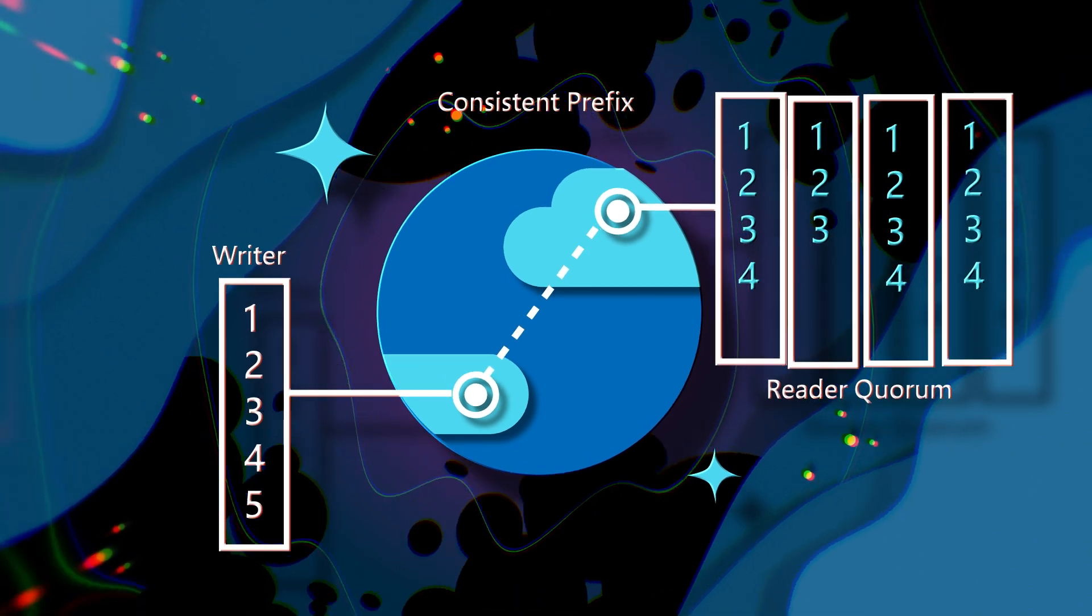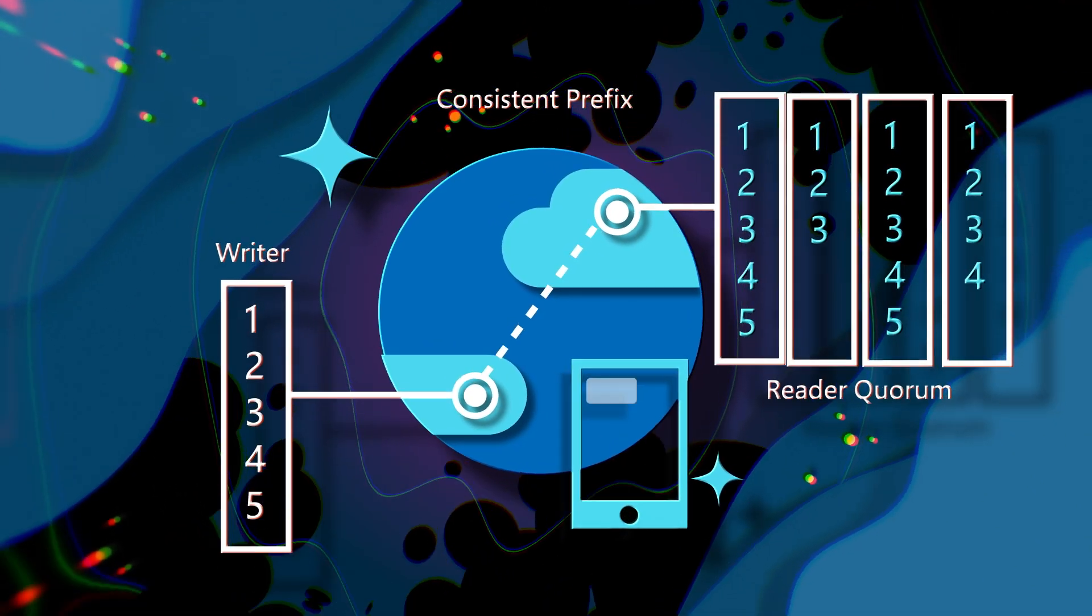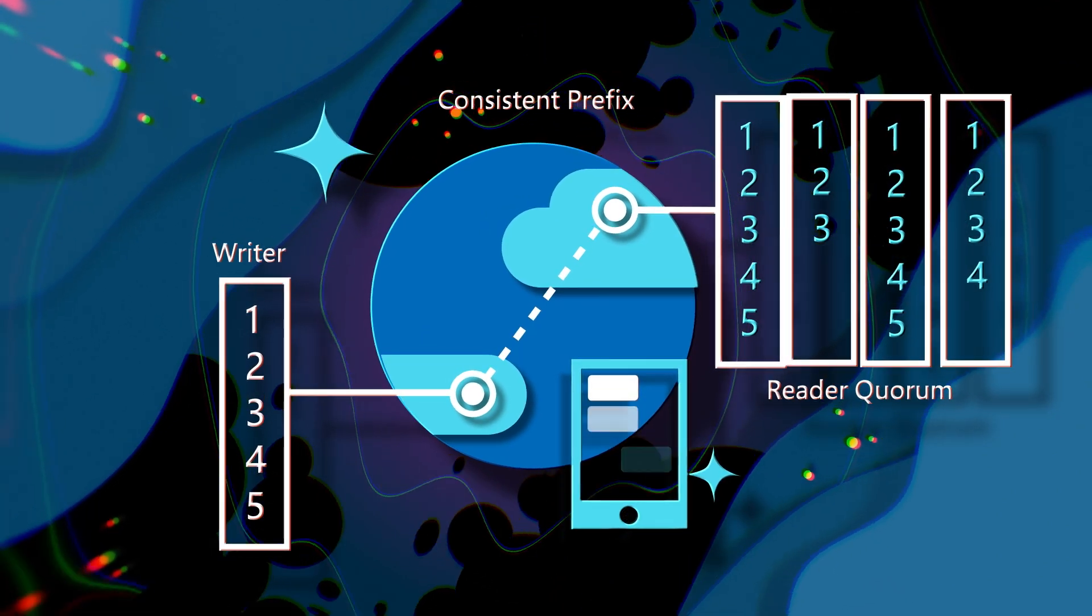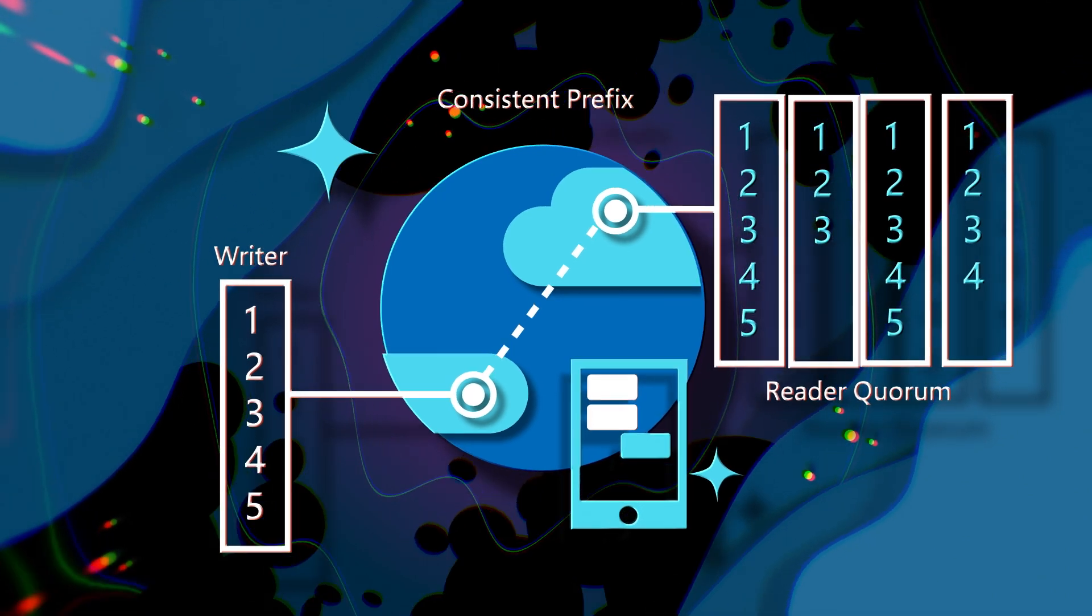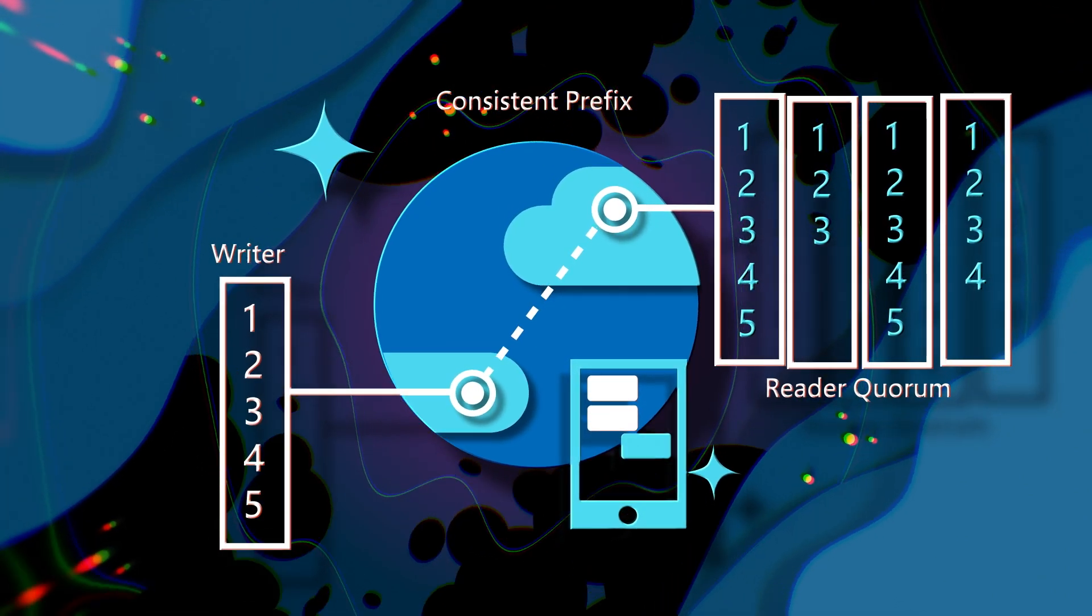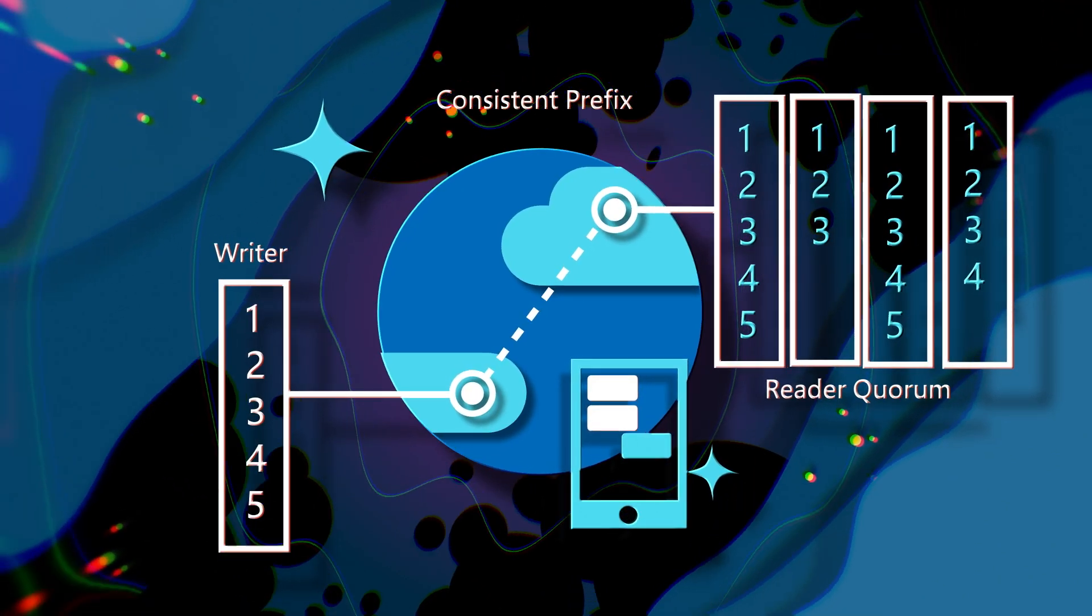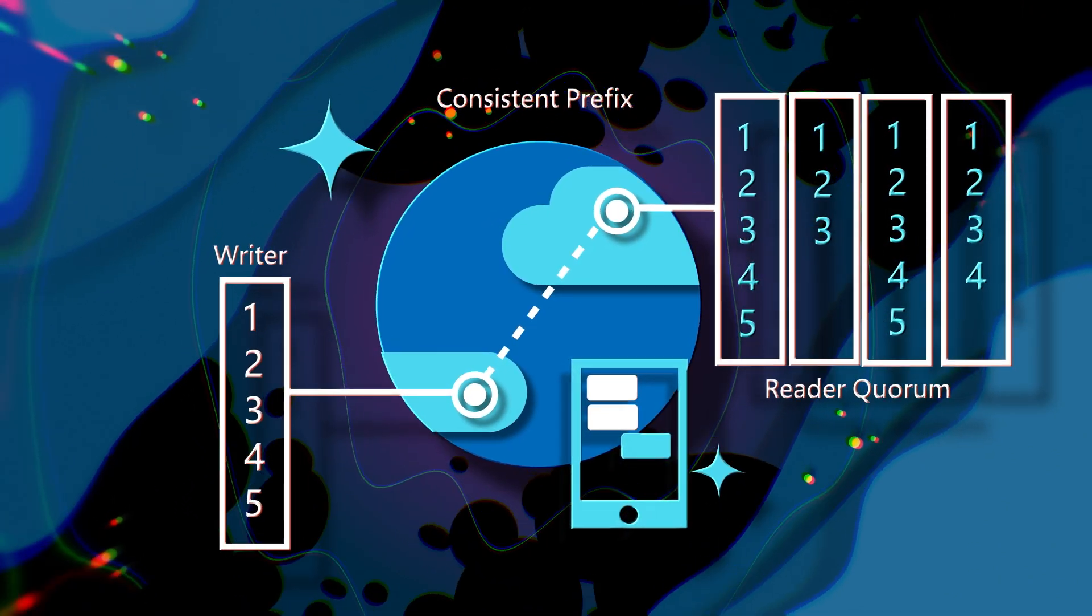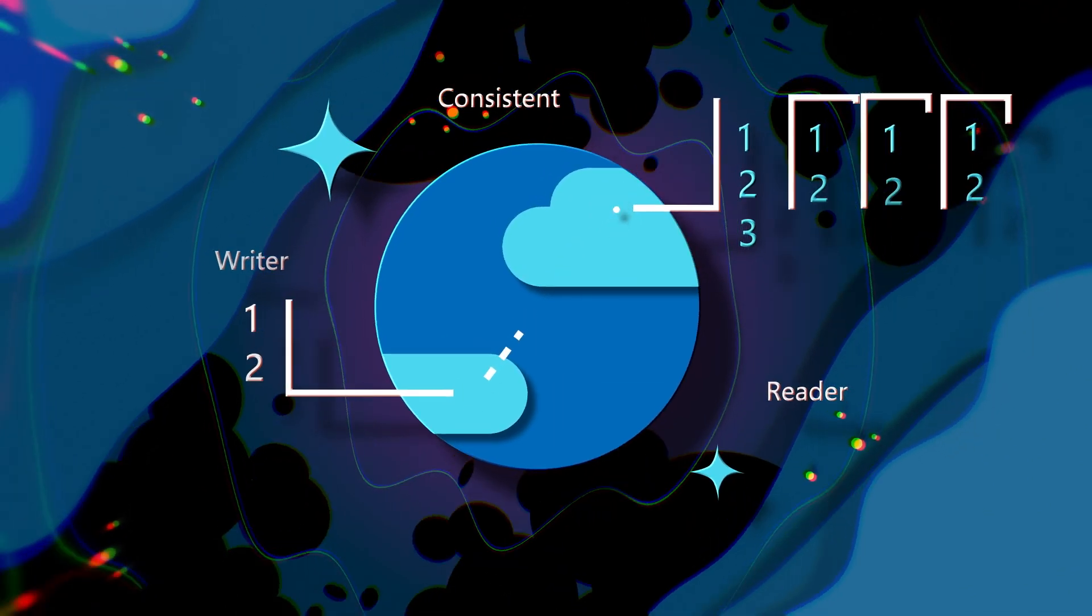If we've ever observed a group chat, we've seen consistent prefix in action. Every message received is in order of when it was sent. If a new message was sent before it was received on my end, it'll appear above my messages sent back into the chat. We use consistent prefix when order matters and pay no latency costs since it's a single replica read path. This guarantees low latency and high throughput on the write path.